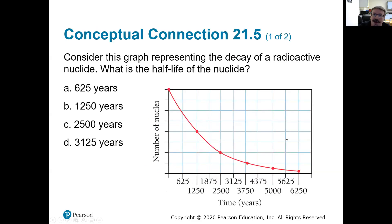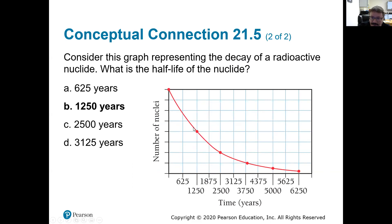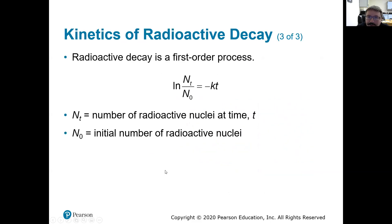Consider the graph representing the decay of a radioactive nuclide — what is the half-life of the nuclide? We start at 100% and go to 50%. The time appears to be 1250 units, since the tick marks look like 625 each. Then half again should be at 2500, confirming a half-life of 1250.